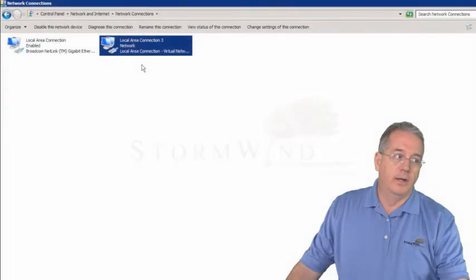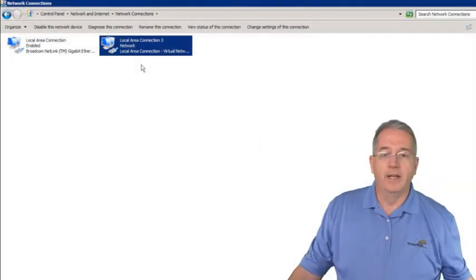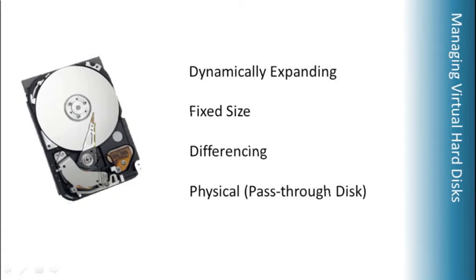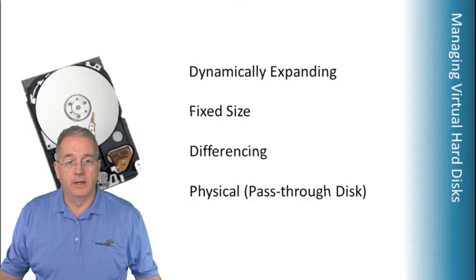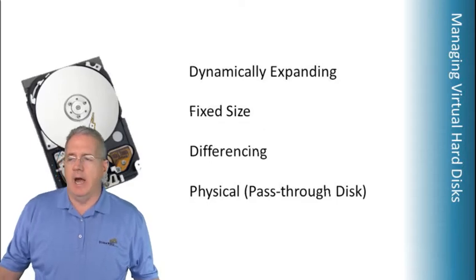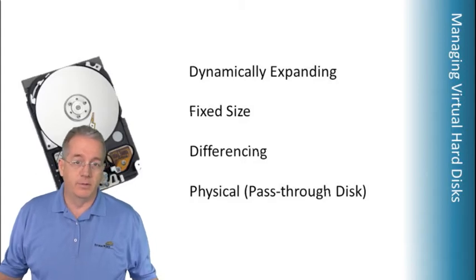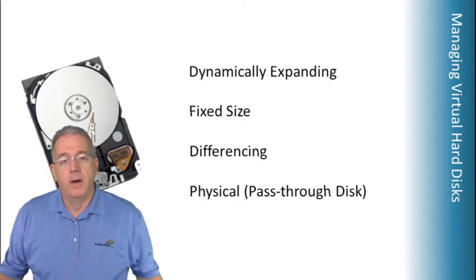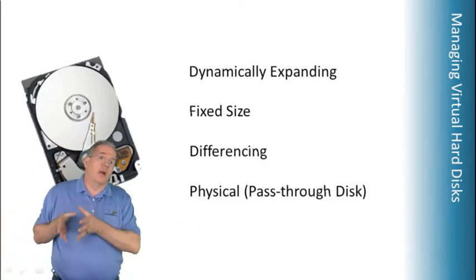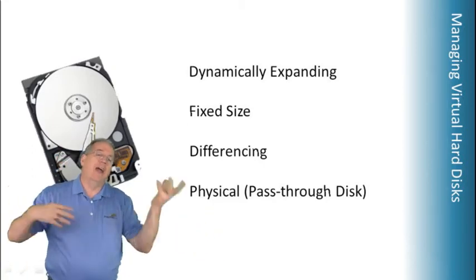Something else you need to worry about is the hard drive. When you create a virtual machine, you have virtual hard drives and there are different types. By default, we're going to have a dynamically expanding hard drive — this is on table 8.2 on page 179. A dynamically expanding hard drive is what a lot of folks like to use because you can say you want a two terabyte drive, but it's not going to take two terabytes right off the bat.